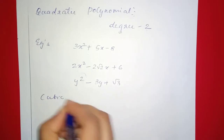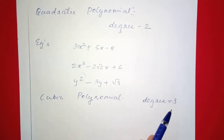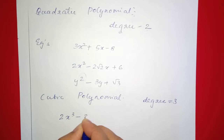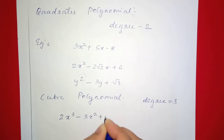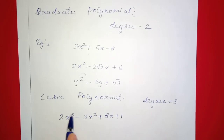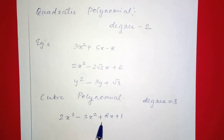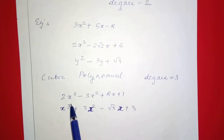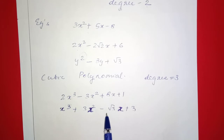If you look at cubic polynomials, the degree is 3. In the next examples: 2x raised to 3 minus 3x squared plus 8x plus 1. This is degree 3, the highest power is 3 — this is a cubic polynomial. Another example: x raised to 3 plus 3x squared minus root 3 times x plus 3. The highest power is 3, so this is a cubic polynomial.